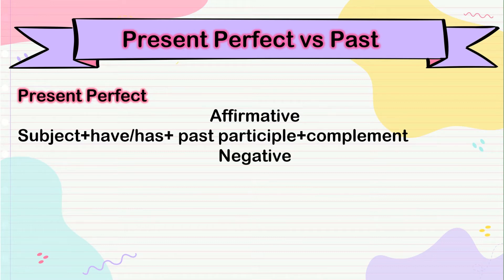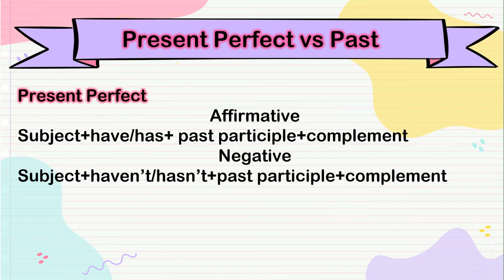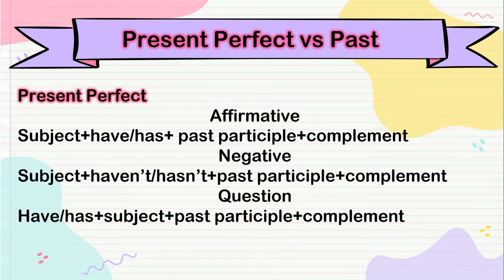In negative form you have: subject plus haven't or hasn't — also depending on the subject you are using — plus the past participle and complement. For a yes/no question, you have have or has, depending on the pronoun, then the subject, the past participle, the complement, and don't forget the question mark.